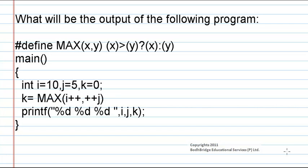What will be the output of the following program? A macro definition is given here: hash define MAX of x comma y, and the definition is a ternary operation x greater than y question mark x colon y. This indicates if the condition that x is greater than y is true, then the result is x, or if the condition is false, that is x is not greater than y, then the result will be y.